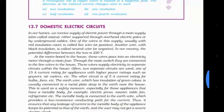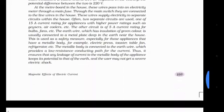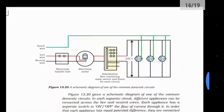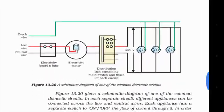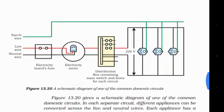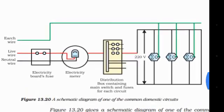Next is our last topic — Domestic Electric Circuits. One simple thing: our domestic electric circuits are in parallel. Why are they in parallel? Because in a series circuit, if one fuse blows, all fingers — all devices — are closed.